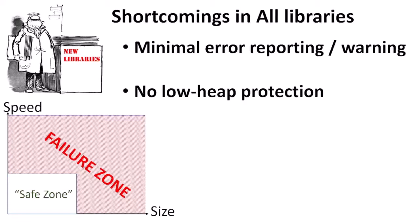As for shortcomings across all libraries: Async TCP causes fewer problems but is a dependency of Async Web Server on ESP32, so it has to be rewritten too. All of these libraries have minimal error reporting or warnings of any impending problems — partly because the author apparently didn't realise how those problems occur. There's no low-heap protection, so if you start getting towards the failure zone, the next thing you know is a crash with no warning, explanation, or error, which makes writing stable apps and debugging very difficult.